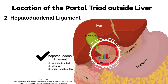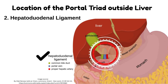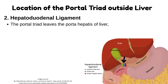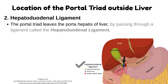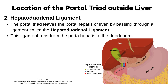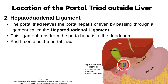Number 2: Hepatoduodenal Ligament. The portal triad leaves the porta hepatis of the liver by passing through a ligament called the hepatoduodenal ligament. This ligament runs from the porta hepatis to the duodenum, and it contains the portal triad.